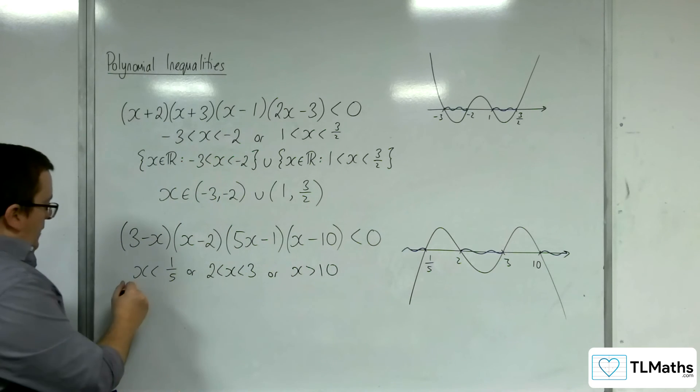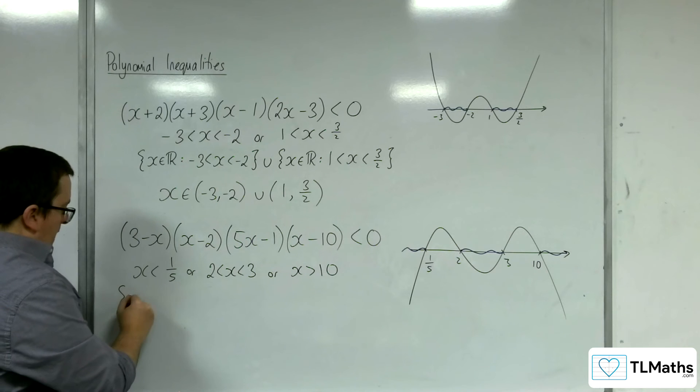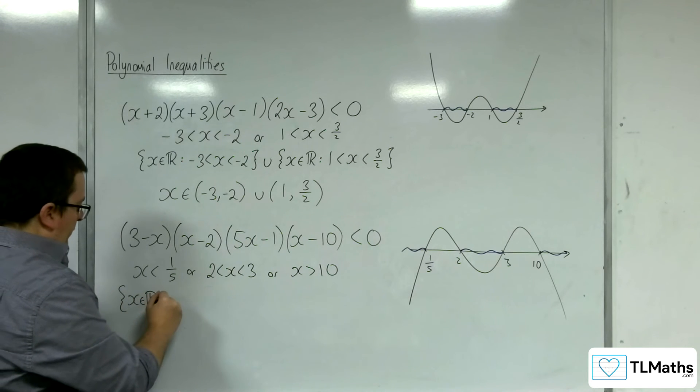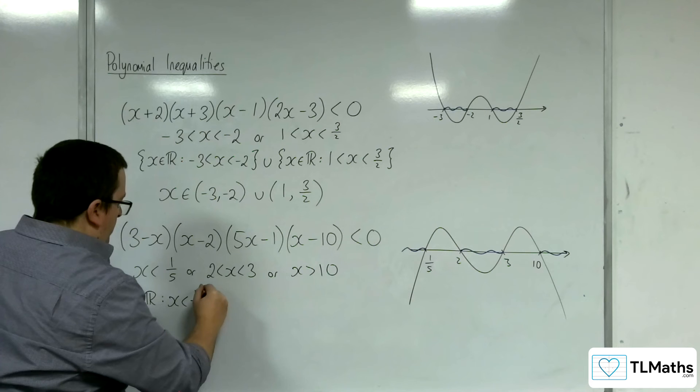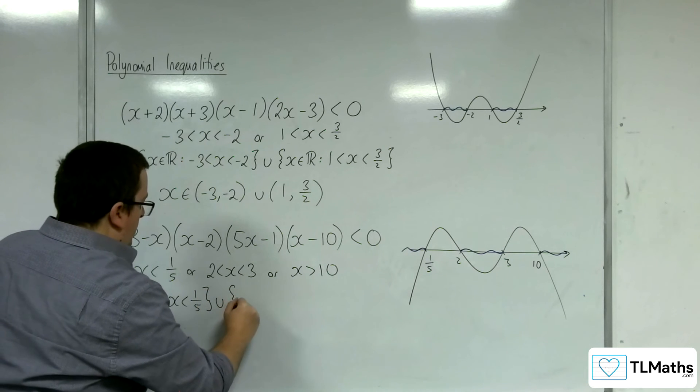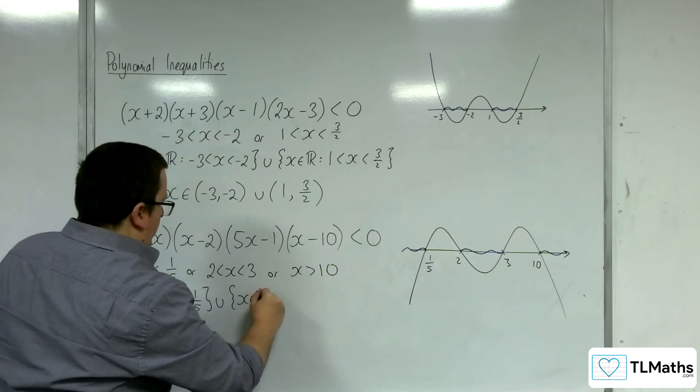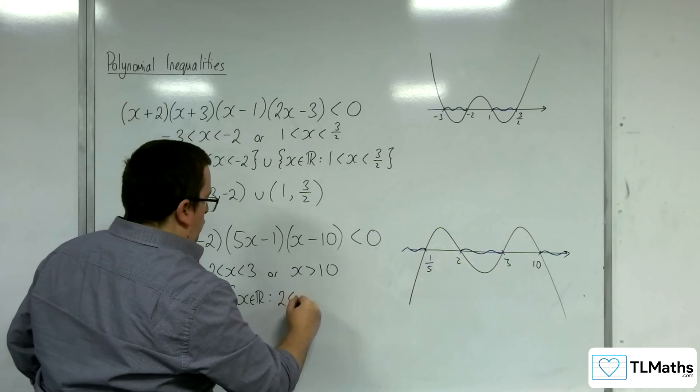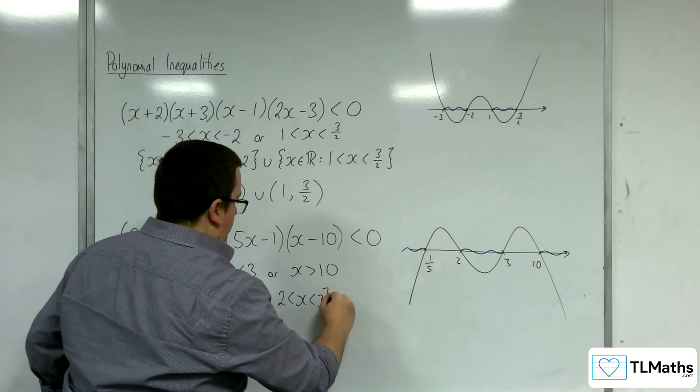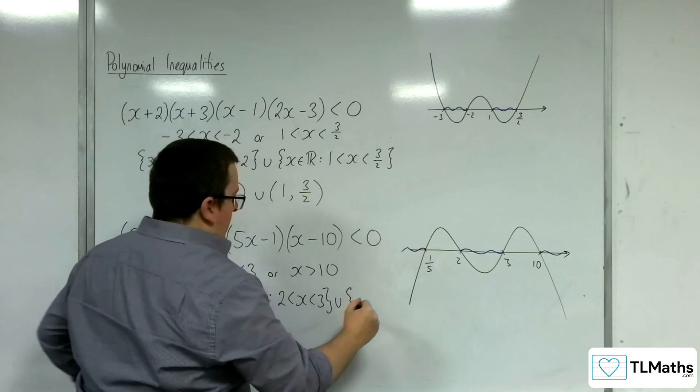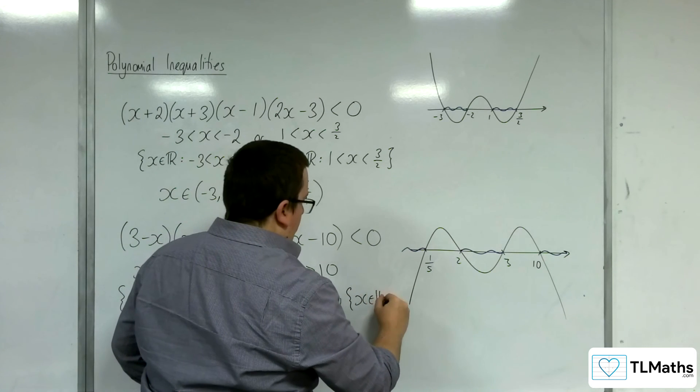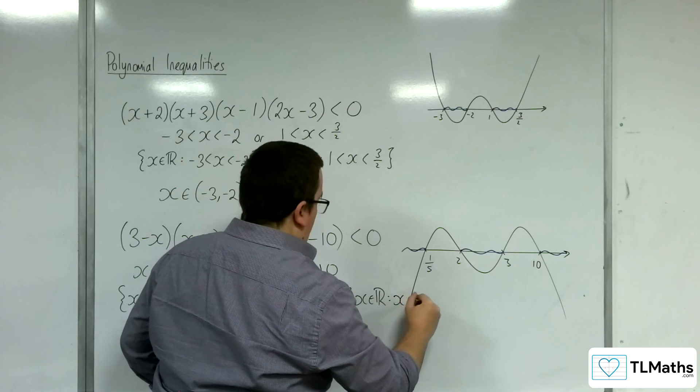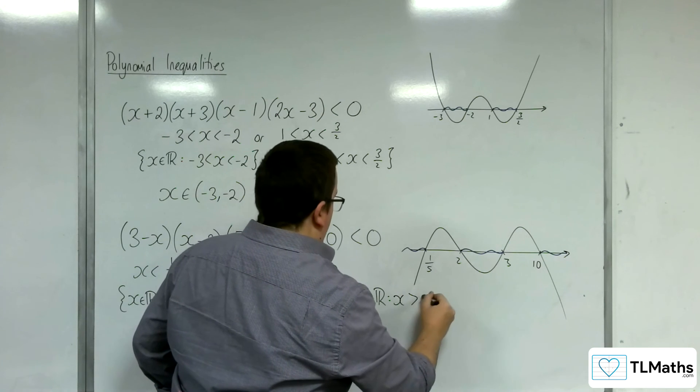So in set notation, x belongs to the real numbers such that x is less than 1 fifth, union x belongs to the real numbers such that x is greater than 2 but less than 3, union x belongs to the real numbers such that x is greater than 10.